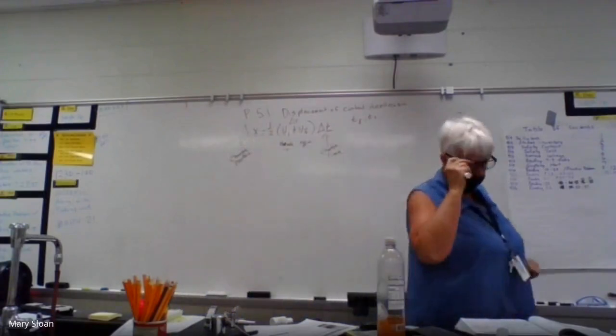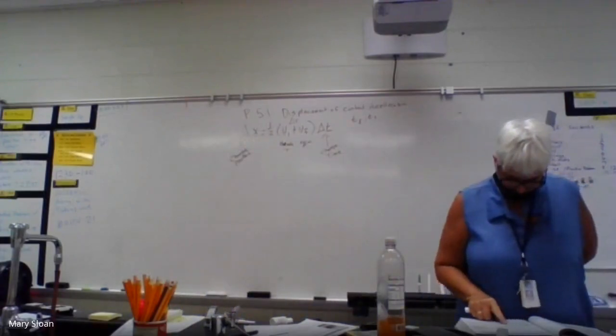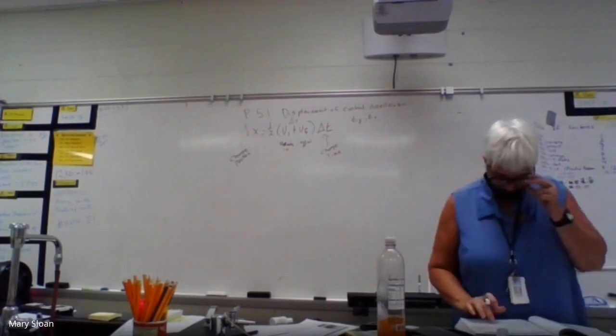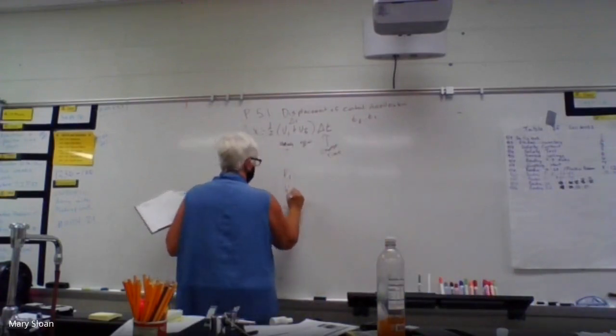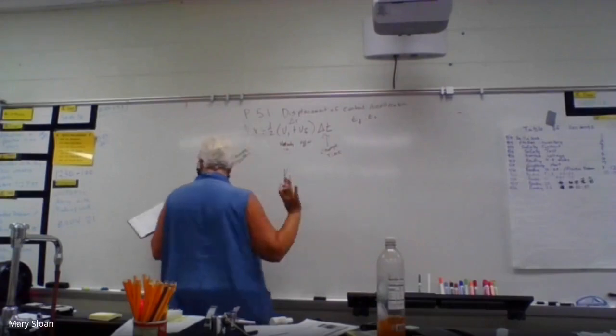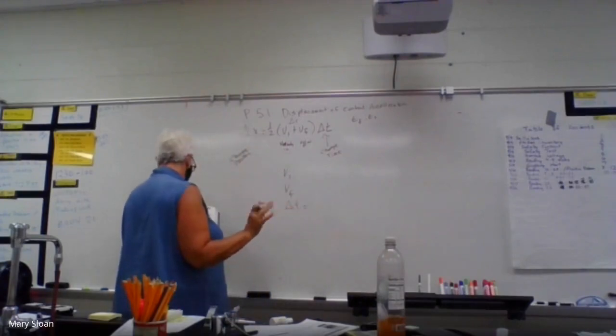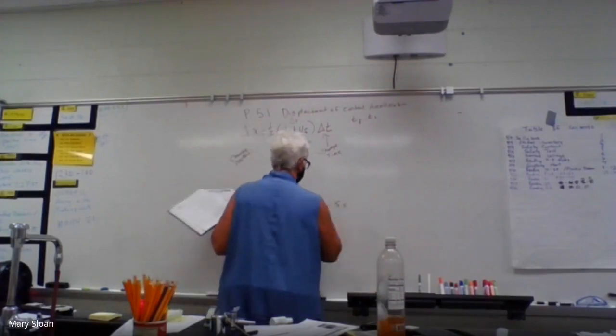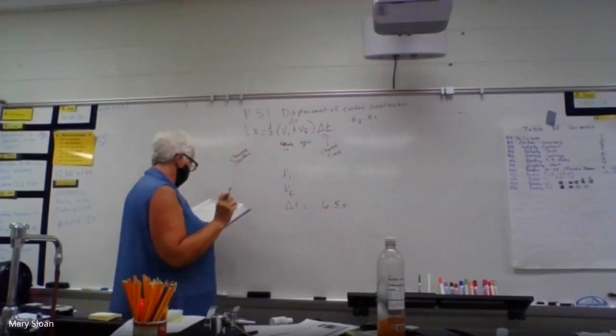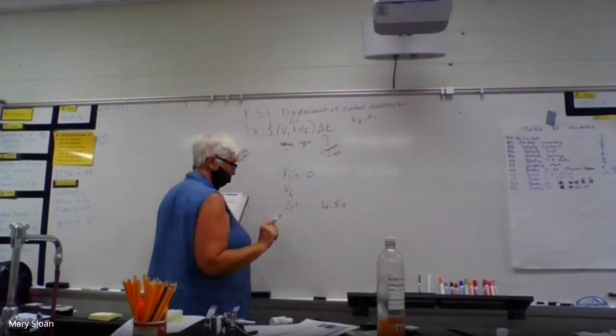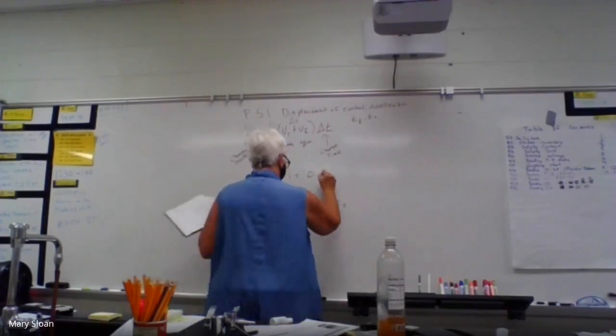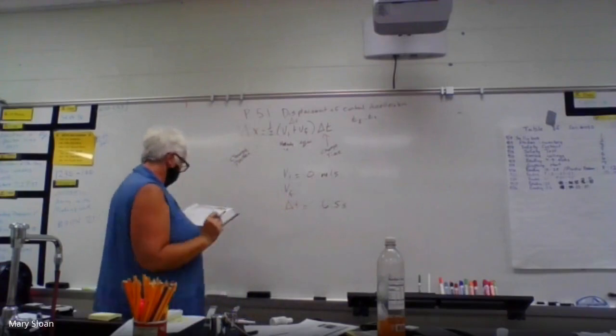So let's read the first question. It says a car accelerates uniformly from rest to a speed of 6.6 meters per second in 6.5 seconds. We got a velocity initial, velocity final, and change in time. The change in time is 6.5 seconds. What is my velocity initial? Zero meters per second. What's my velocity final? 6.6 meters per second.